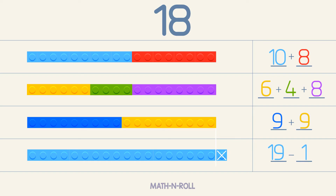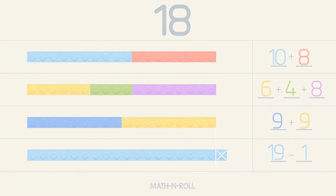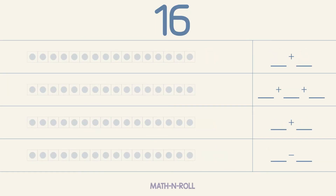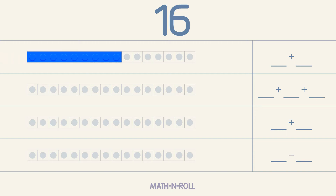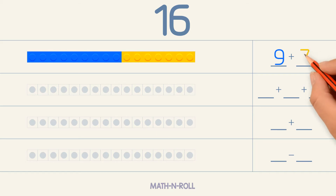We can add and subtract in different ways to make 16. Let's make 16 by adding 2 numbers. We can pick any number less than 16 for the first number. Let's take 9. To make 16, we have to add 7 more pieces. So 9 plus 7 equals 16.